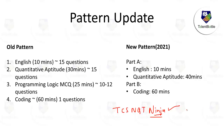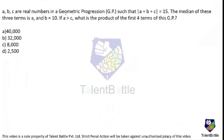The first problem: A, B, C are real numbers in a geometric progression such that the mod of (A + B + C) equals 15. The median of these three terms is A, and B equals 10. If A is greater than C, what is the product of the first four terms of this GP? Pay attention to the basic concepts here — the sum is actually very easy but we make mistakes due to unfamiliarity with basics.